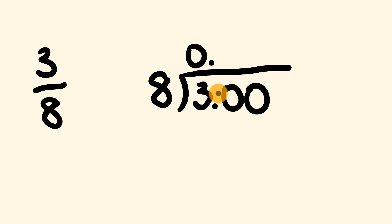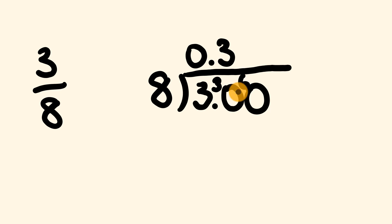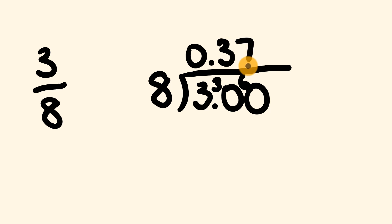We're going to carry this 3 across. So how many times does 8 go into 30? 8 goes into 30 three times — 3 eights are 24 — so there is 6 remainder. This 6 is going to go right here. The next question is how many times does 8 go into 60? It goes in 7 times — 7 eights are 56 — so we'll put a 7 here and we have 4 left over.